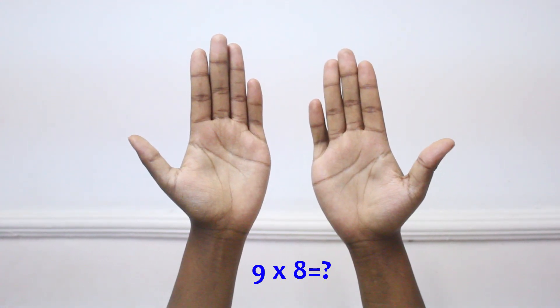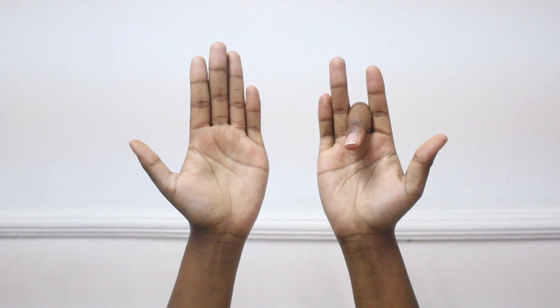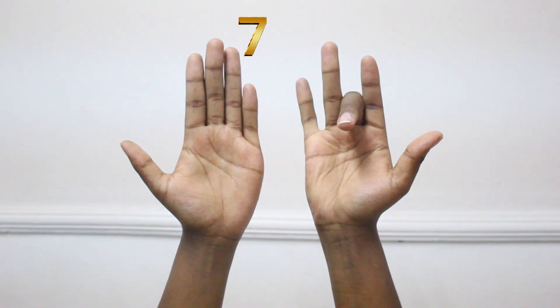Let's take another example. 9 times 8. Put the 8th finger down. Now you have 7 fingers up before the finger you curled under and 2 fingers after it, so the answer is 72. And that's it for the 9 times table.